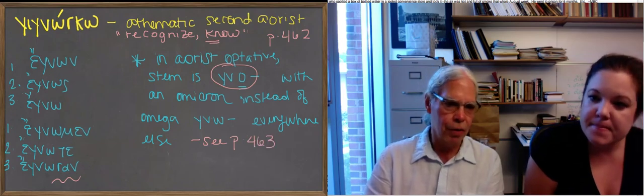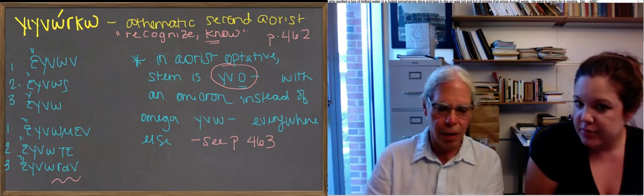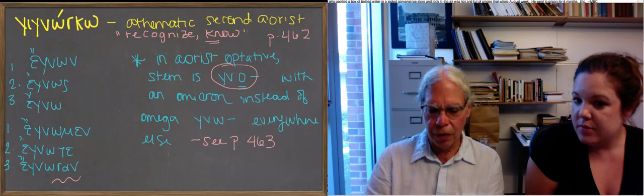gno and gnote, gnosi. You deleted the etas out of the paradigm, because you've got omicrons everywhere. But they're listed on page 463.